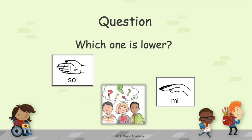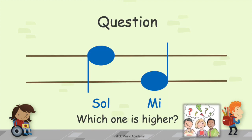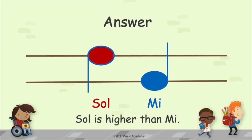So, if you look at just the hand signs, so and me, which one is lower? Yes, you're right again. The hand sign me is lower than the sign for so. Now look at where these two notes live on the musical road. Which one is higher? That's right. So is higher than me.